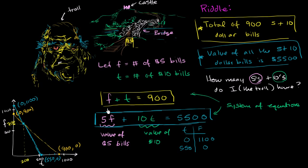700 plus 200 - 700 plus 200 equals 900. And if I have 700 fives - let me write this down - 5 times 700 is going to be the value of the fives, which is $3,500. And then 10 times 200, which is $2,000 - $2,000 is the value of the tens. And if you add up the two values, you indeed get to $5,500. So this looks right.